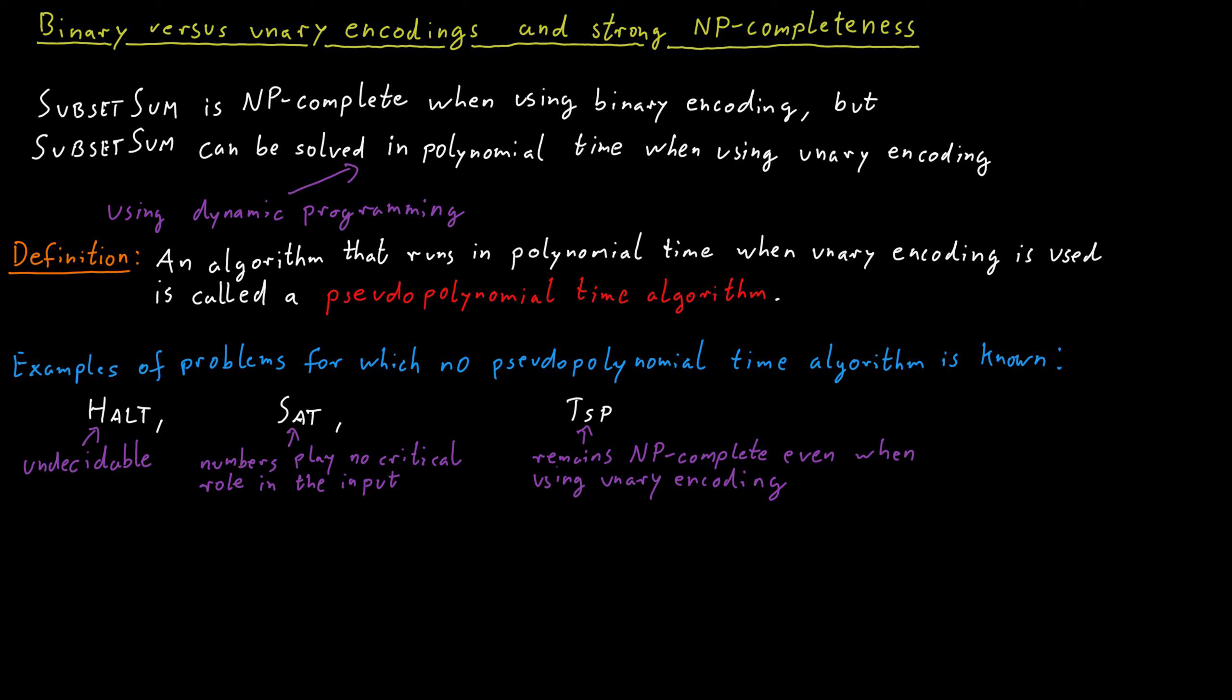And so there's a difference between different types of problems. For the traveling salesperson problem, we don't think there's a pseudopolynomial time algorithm. But for subset sum, we know that there is a pseudopolynomial time algorithm that solves the problem. And so it's interesting to distinguish those types of different problems from one another. And that gives rise to a new definition.